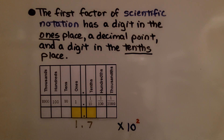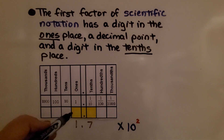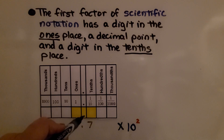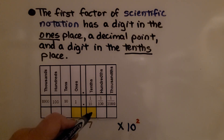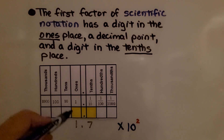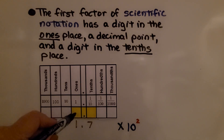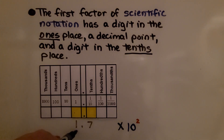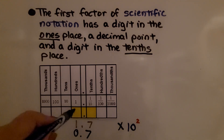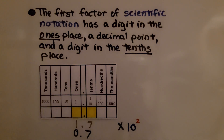The first factor of scientific notation has a digit in the ones place, a decimal point, and a digit in the tenths place. And this ones-place digit cannot be zero — we can't have 0.7. It's got to be greater than or equal to 1 and less than 10.